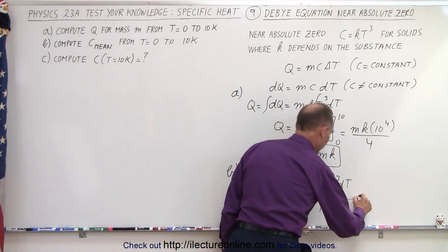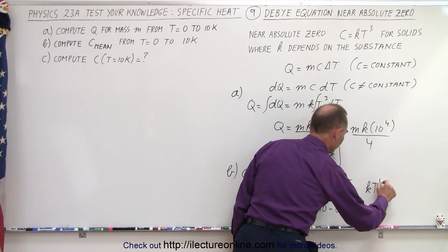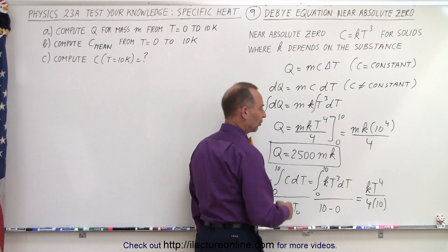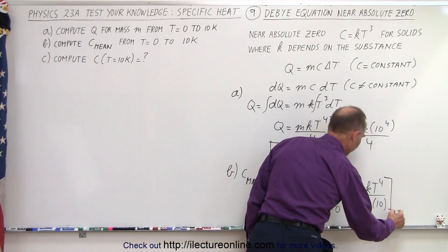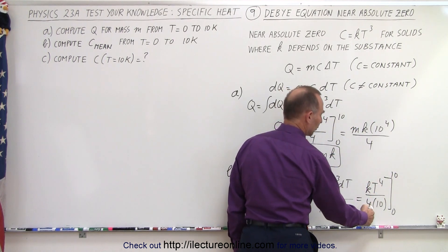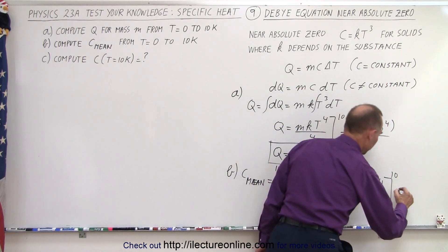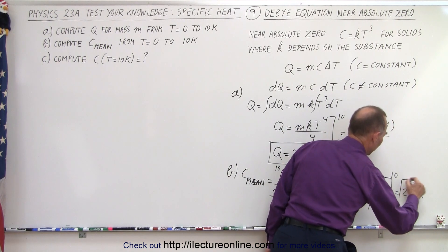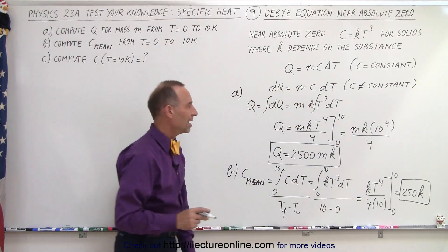That would be equal to K times T to the 4th over 4, times 1 over 10, evaluated from 0 to 10. T to the 4th gives 10 to the 4th, so we get 10 to the 3rd divided by 4, which equals 250 times K. So that is the average or mean specific heat.